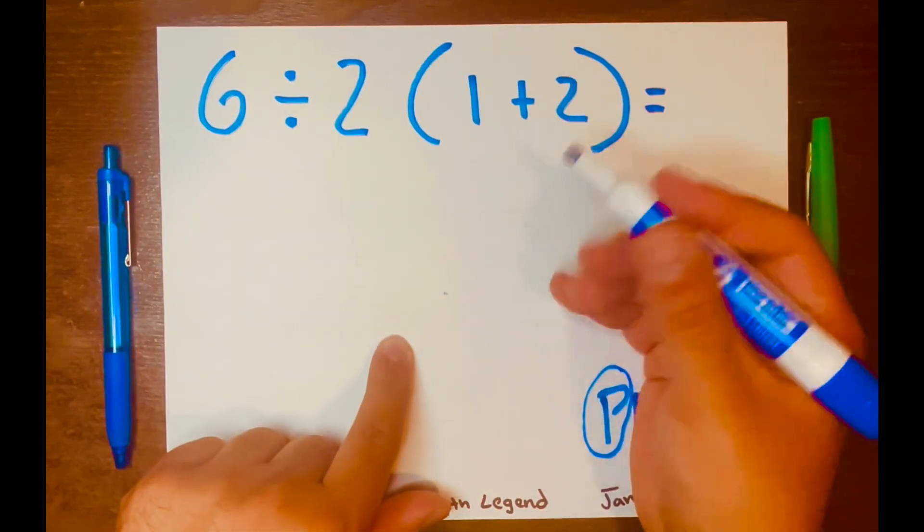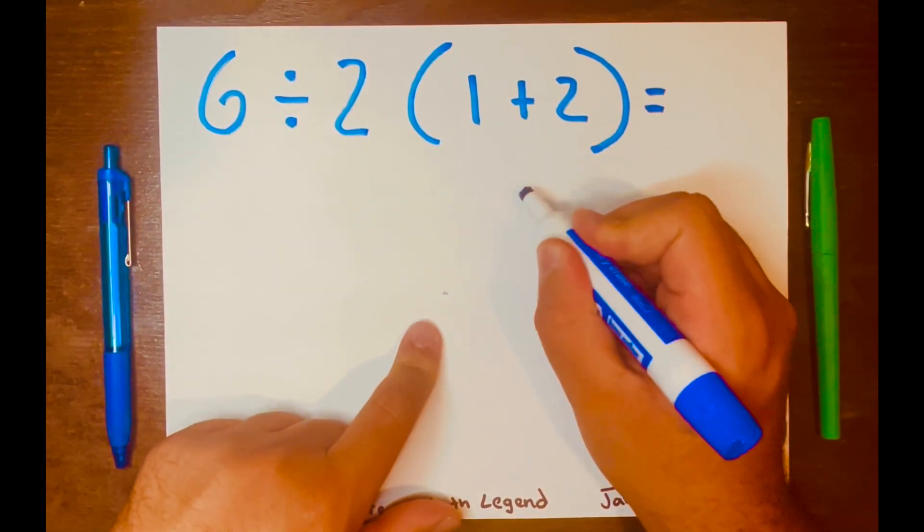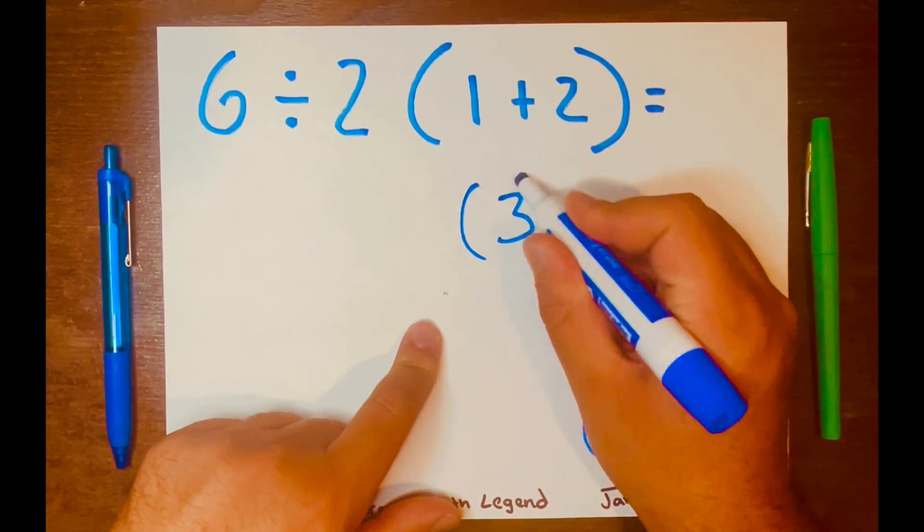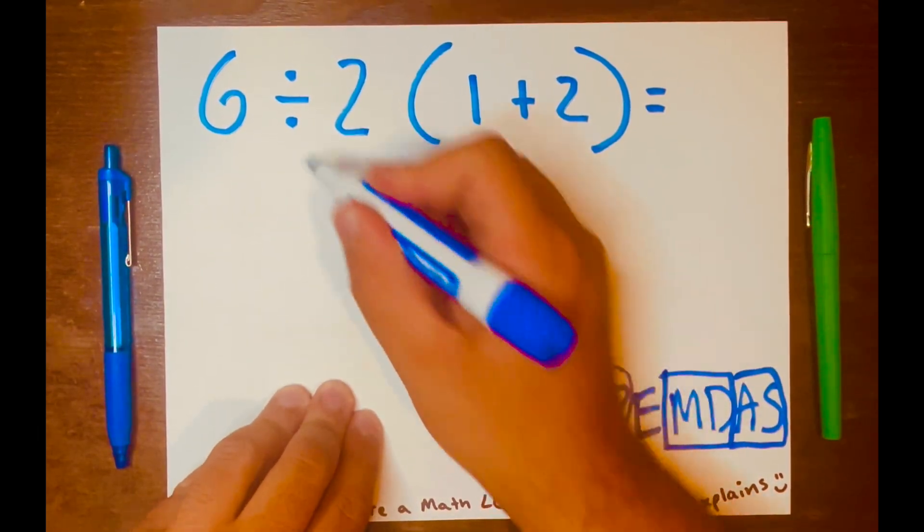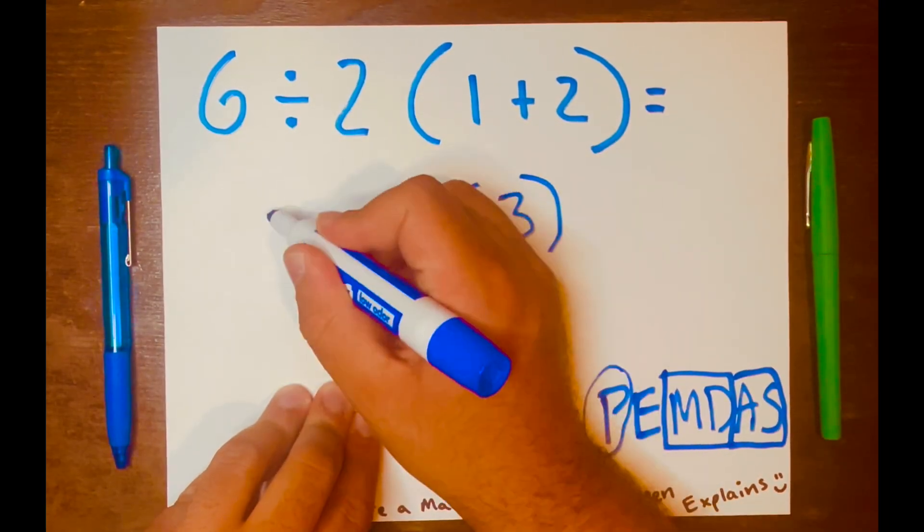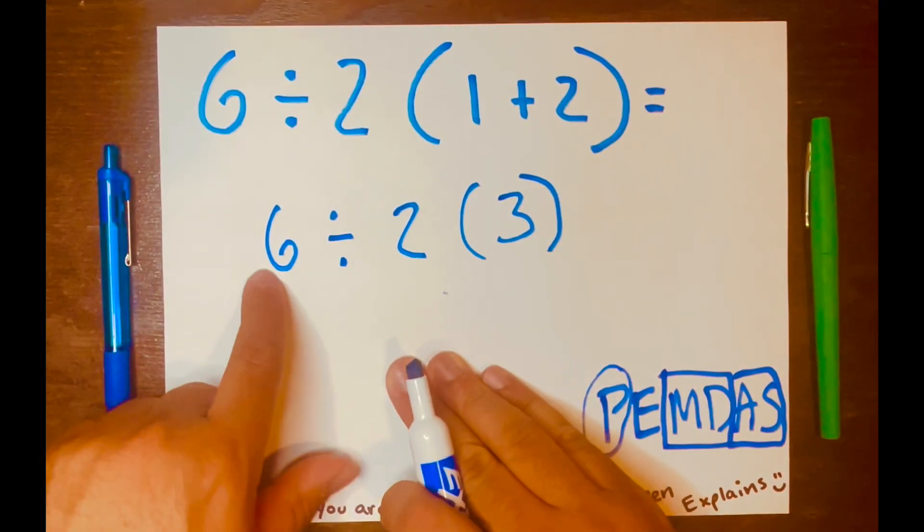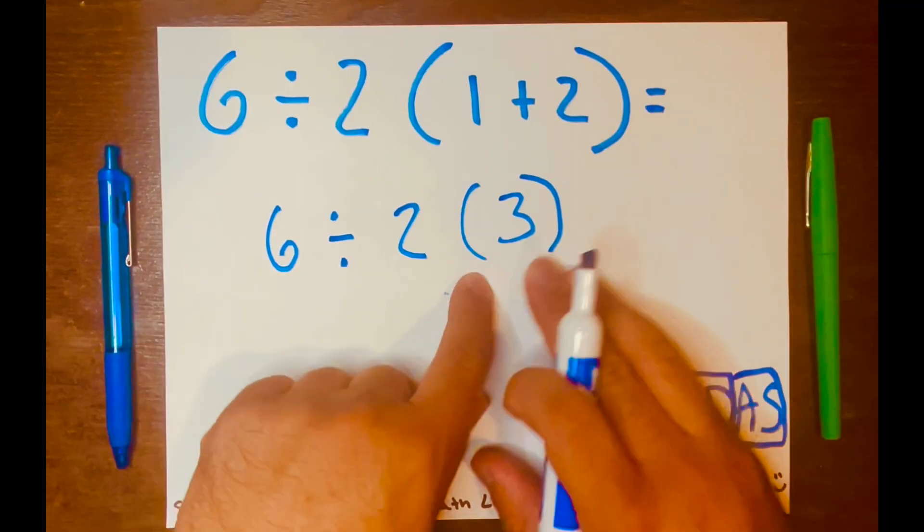So, 1 plus 2 will go first. So, 1 plus 2 is 3, and then keep the brackets, right, and then bring down the 2, the division symbol down, and the 6 down. So, now we have 6 divided by 2 times 3.